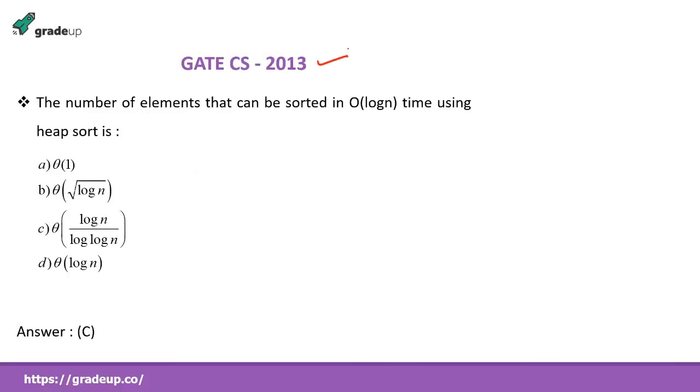Gate CS 2013. In 2013 a question is asked on heap sort. What is the question? See read it with me. The number of elements that can be sorted in log n time using heap sort. It is asking how many elements can be sorted using log n time. See you know if n elements are there then n log n time is required. Now it is asking that in log n time how many elements can be sorted. That is the question.